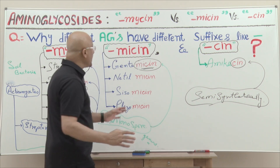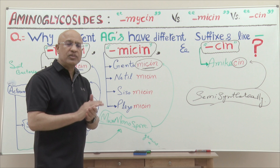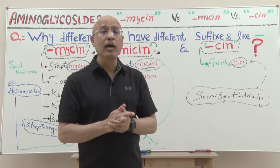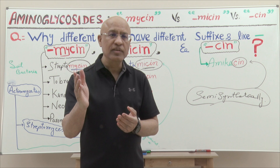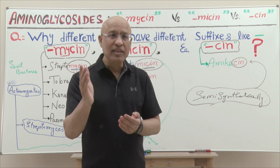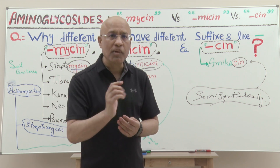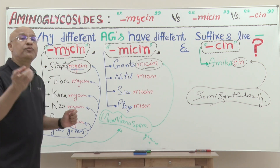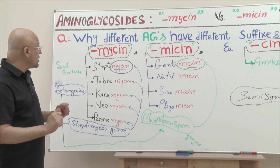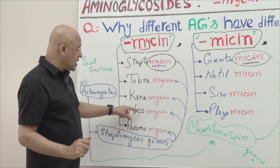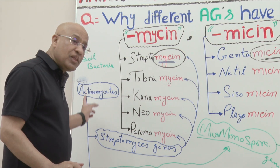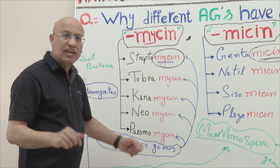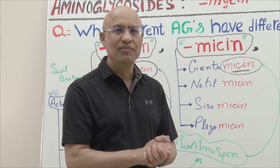Another question we will discuss in the next session: macrolides also end in '-mycin' — for example, erythromycin, azithromycin, and clarithromycin. The question is how to differentiate aminoglycosides ending in '-mycin' from macrolides also ending in '-mycin'. We will discuss that in the next session. Thank you very much.